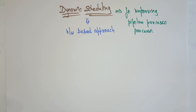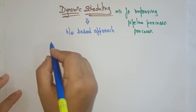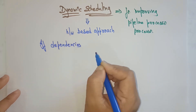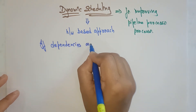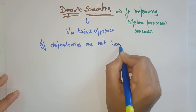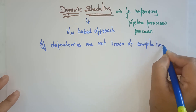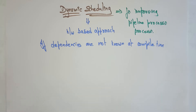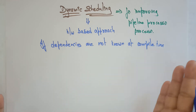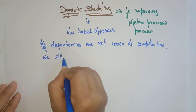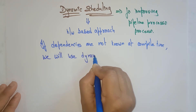Static scheduling means instructions are always scheduled by the compiler. But dynamic scheduling is a hardware-based approach. If dependencies between instructions are not known at compile time, we use dynamic scheduling. If dependencies are known at compile time, the software itself will modify and rearrange instructions, minimizing hazards. But if dependencies are not known at compile time, we use dynamic scheduling.